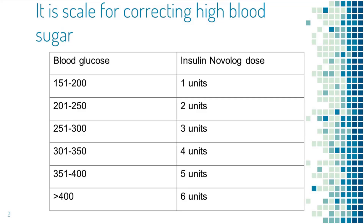Let's say your blood sugar is 300 and you have some type of short acting insulin at home, like Humalog or Novolog. But how much insulin to give for blood sugar at 300? You will need to look at the sliding scale.